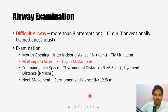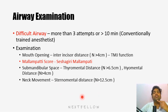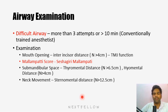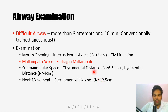Another method for assessing neck movement is the sternomental distance. You measure the distance from the manubrium sternum to the mentum — it should be more than 12.5 centimeters. Ask the patient to close their mouth and extend maximally, then measure the distance between these two points. So now you are familiar with these five airway examination distances.